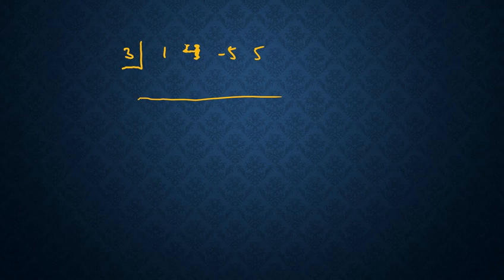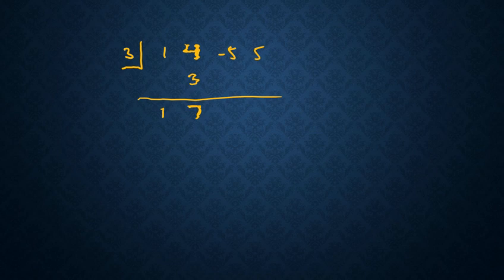The first number, 1, automatically comes down below the bar. 1 times 3 gives 3, which goes above the bar in the next column. 4 + 3 = 7; write 7 below the bar. 7 times 3 = 21; negative 5 + 21 = 16. 16 times 3 = 48; 5 + 48 = 53. So our bottom row reads: 1, 7, 16, 53.